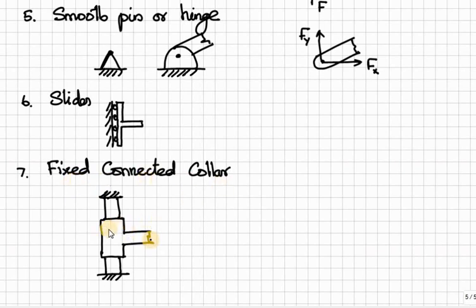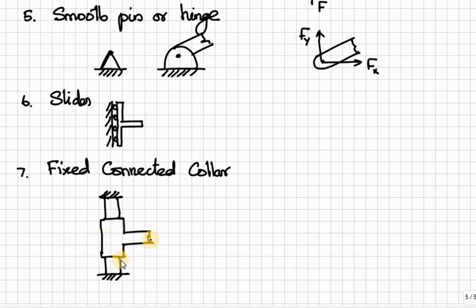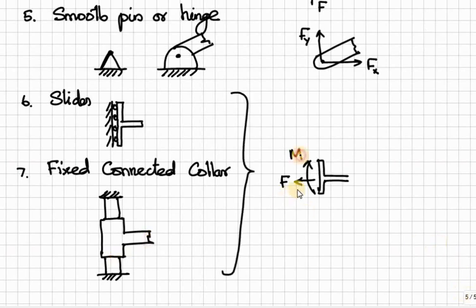Similarly, in fixed connected collar - we have already seen the smooth pin connected collar whereas here the structure arm is a structural element firmly connected with the collar. So it cannot rotate, meaning rotational resistance is arrested and it has a rotational resistance. Moreover, it cannot move perpendicular to the collar, so there is one reactive force in that direction, but it can move along the collar. Therefore, here also we have two forces: one perpendicular to the collar and another one is rotational resistance moment.